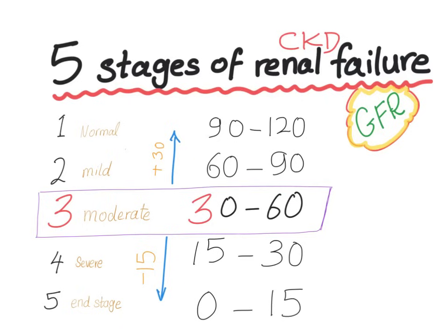Some classifications include 3a and 3b, where the 30-unit range of Stage 3 is divided into two 15-unit portions, but it's kind of useless since 3a and 3b are both moderate. To summarize: remember Stage 3 is 30 to 60, add 30 for earlier stages, subtract 15 for later stages — done. Five stages of chronic kidney disease.